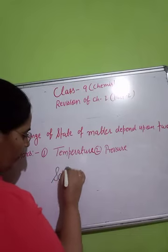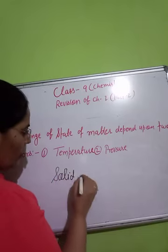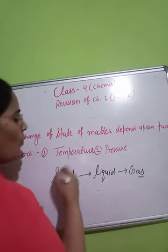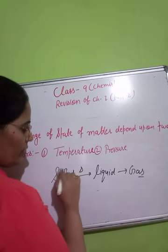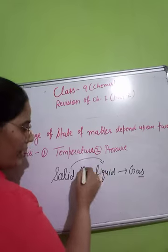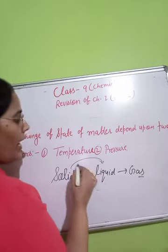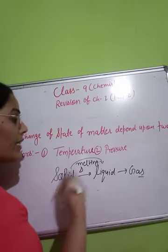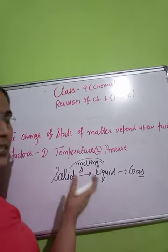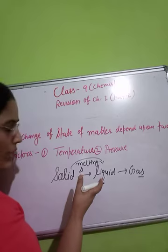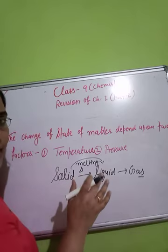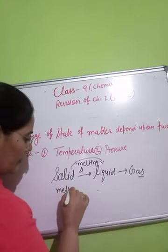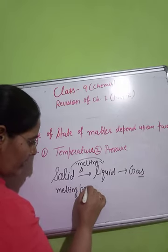We saw that solid changes into liquid and liquid changes into gases. When we heat a solid, the solid particles move apart and convert into the liquid state. That process is known as melting. The temperature at which the solid state of a substance starts to convert into liquid — that particular temperature is known as the melting point of that substance.